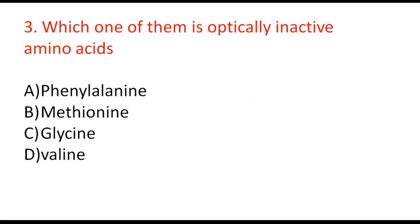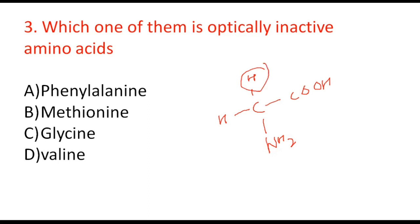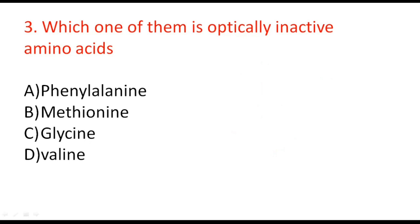Next question: which one of them is an optically inactive amino acid — phenylalanine, methionine, glycine, or valine? The optically inactive amino acid is glycine. Optically inactive amino acids are those that have two similar groups attached to the same carbon — in glycine, two hydrogen atoms are attached to the alpha carbon. Amino acids with four different groups on the same carbon have a chiral carbon and are optically active. So the correct option is C, glycine.